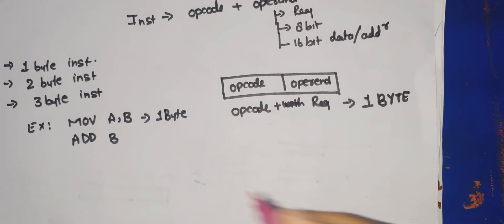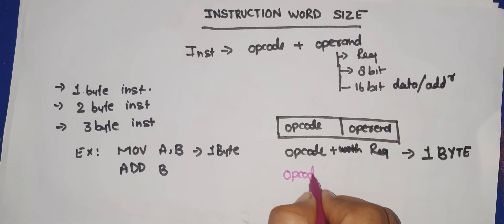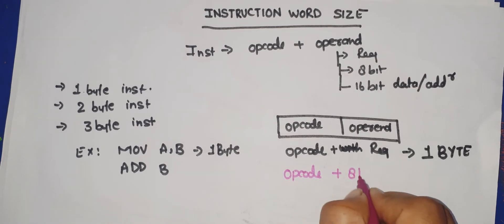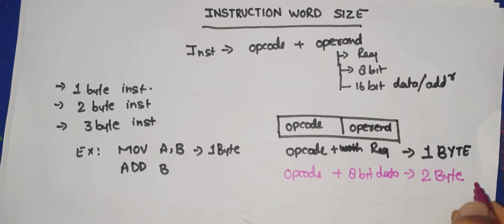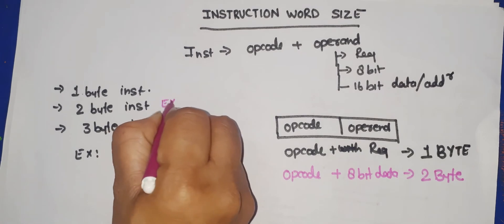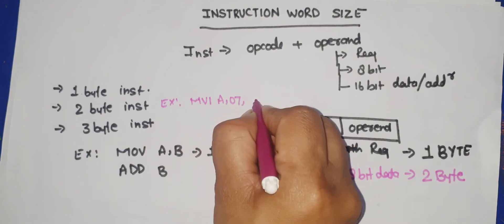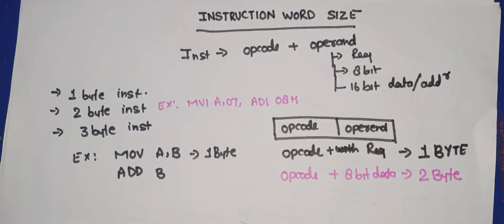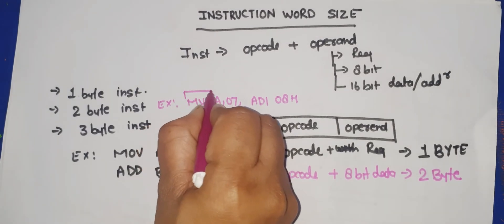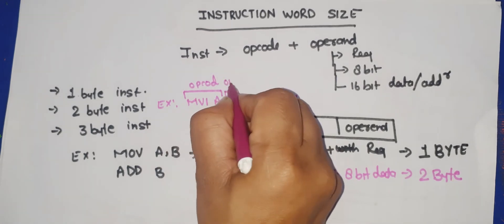If an instruction is a combination of opcode plus 8-bit data, then it is a two-byte instruction. Examples of two-byte instructions are MVI A,07 and ADI 08H, and many more examples are available. In the case of a two-byte instruction, one byte is required for the opcode and one byte is required for the operand.